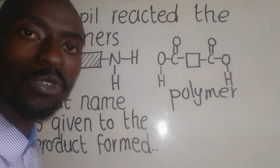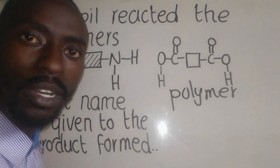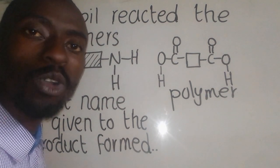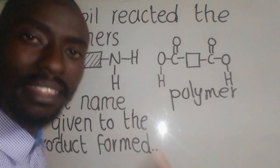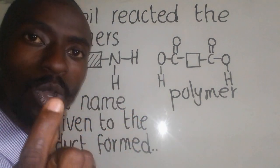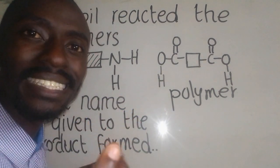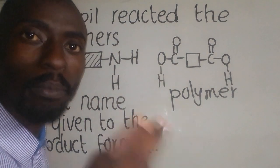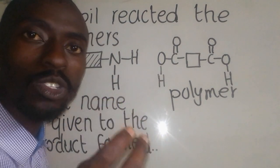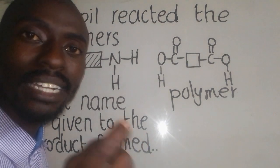Examples of addition polymer, we have polypropene. Examples of condensation polymers is that they're being divided into two: we have the natural condensation polymers and the artificial condensation polymers. Now examples of natural polymers we are talking about these.